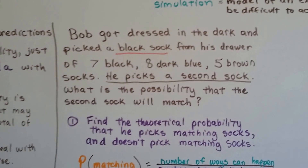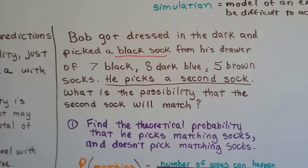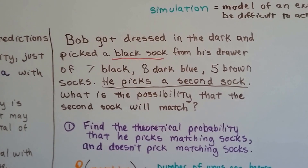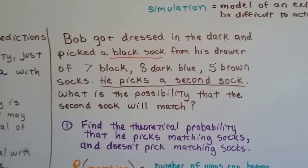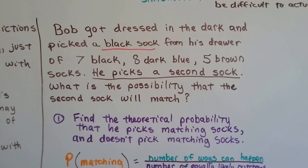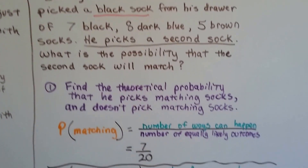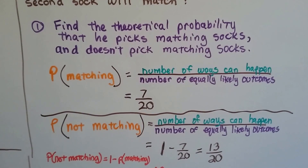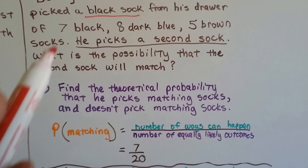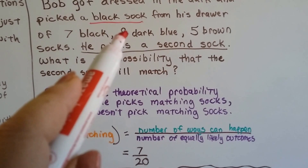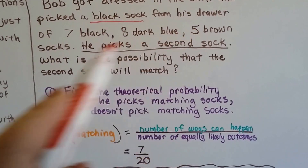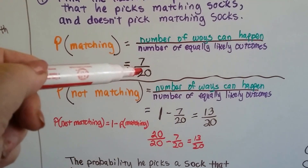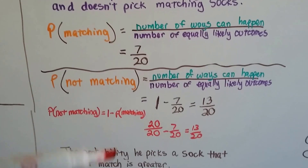Bob got dressed in the dark and picked a black sock from his drawer of 7 black, 8 dark blue, and 5 brown socks. He picks a second sock. What's the possibility that the second sock will match? We find the theoretical probability that he picks matching socks. 7 plus 8 is 15, plus 5 more, that's a total of 20 socks. So he's got a 7 out of 20 chance of picking a black sock.